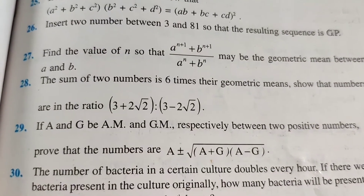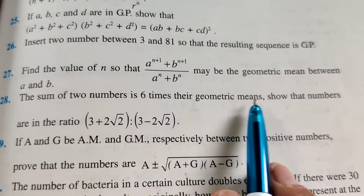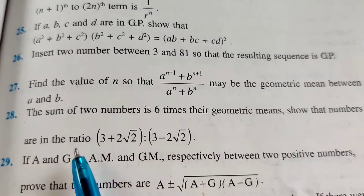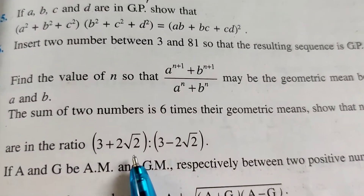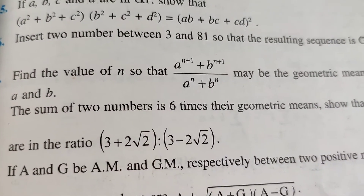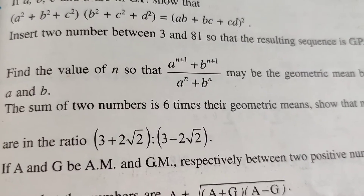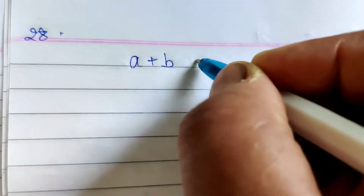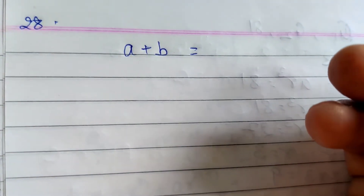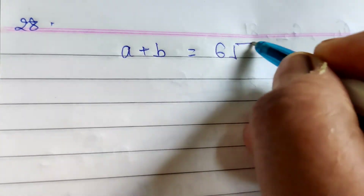Question number 28: The sum of 2 numbers is 6 times their geometric mean, show that the numbers are in the ratio (3 + 2√2) to (3 - 2√2). Suppose a + b equals 6 times the geometric mean, that is 6 times root(ab).